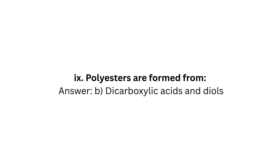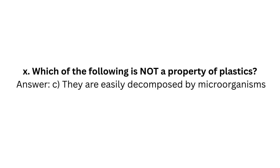Question 9: Polyesters are formed from? Answer: B — Dicarboxylic acids and diols. Question 10: Which of the following is not a property of plastics? Answer: C — They are easily decomposed by microorganisms.